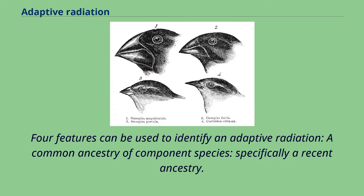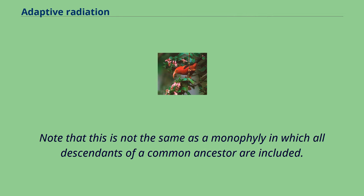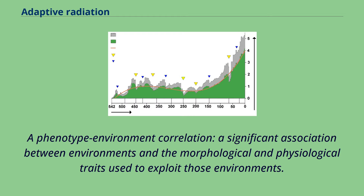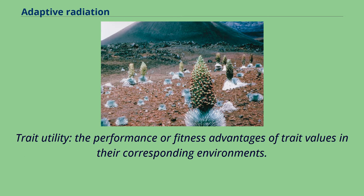Four features can be used to identify an adaptive radiation: a common ancestry of component species, specifically a recent ancestry. Note that this is not the same as a monophyly, in which all descendants of a common ancestor are included. A phenotype-environment correlation: a significant association between environments and the morphological and physiological traits used to exploit those environments. Trait utility: the performance or fitness advantages of trait values in their corresponding environments.